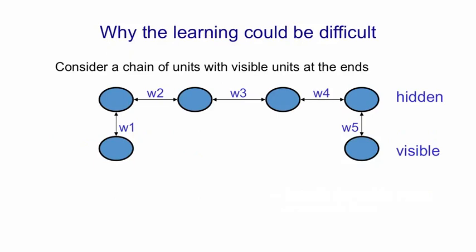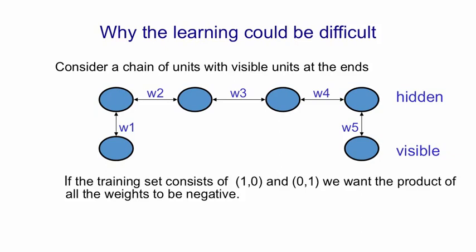Now there are many reasons why the learning could be difficult. This is probably the most important reason. If you consider a chain of units, a chain of hidden units here, with visible units attached to the two ends, and if we use a training set that consists of one zero and zero one, in other words, we want the two visible units to be in opposite states, then the way to achieve that is by making sure that the product of all those weights is negative.